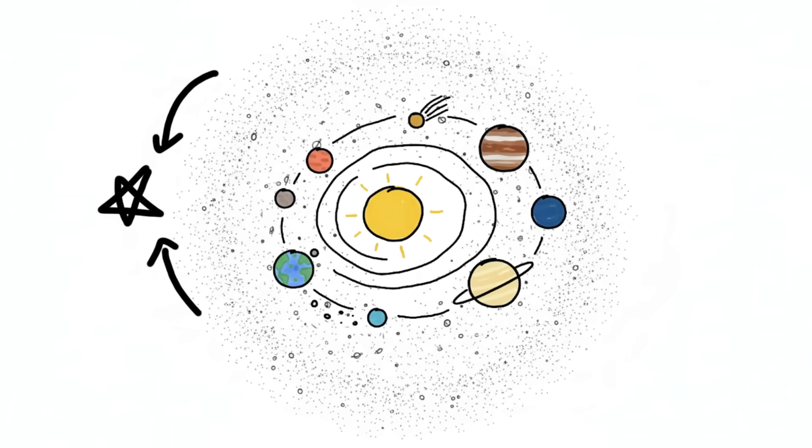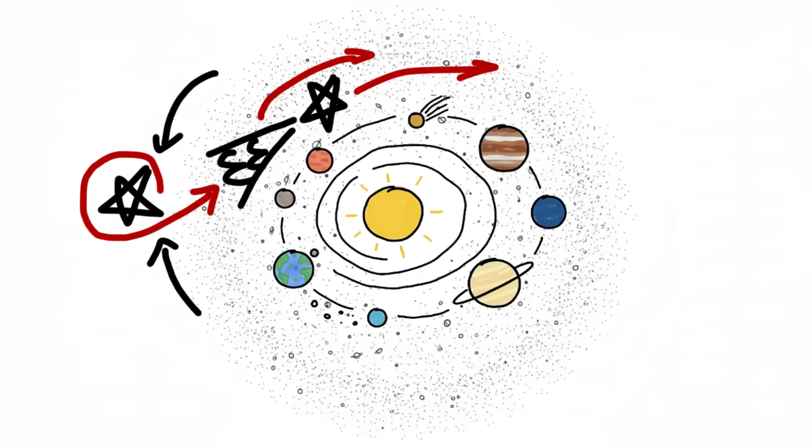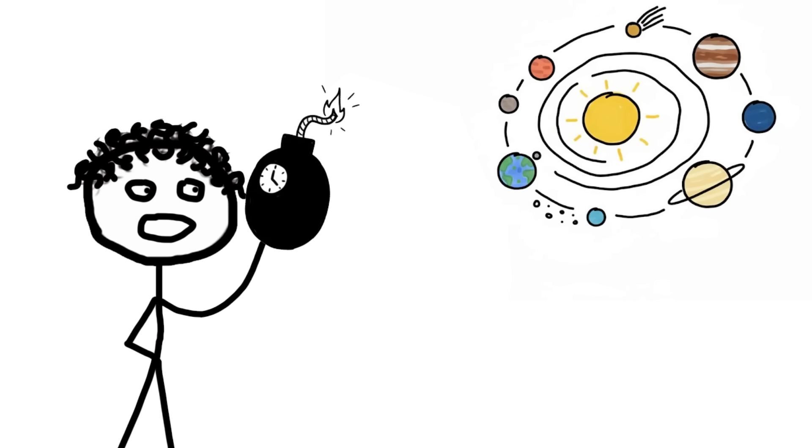The creepy part? Every so often, the gravitational pull from a passing star or a nearby molecular cloud gives this trillion-strong swarm a little gravitational nudge. This nudge sends a few of those icy bodies, which we call comets, hurtling on long looping trajectories toward the inner solar system, where they can occasionally spell disaster for planets like ours.